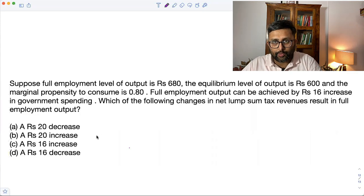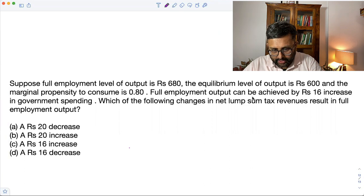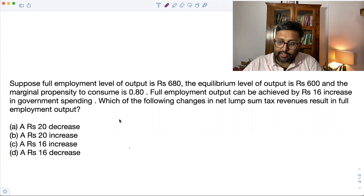Have a look at this question. Read the question and try to answer it yourself first. Suppose full employment level of output is given to you as 680 rupees. The equilibrium level of output is 600 and the marginal propensity to consume is 0.80. Full employment output can be achieved by 16 rupees increase in government spending, which of the following changes in the net lump sum tax revenues result in full employment.